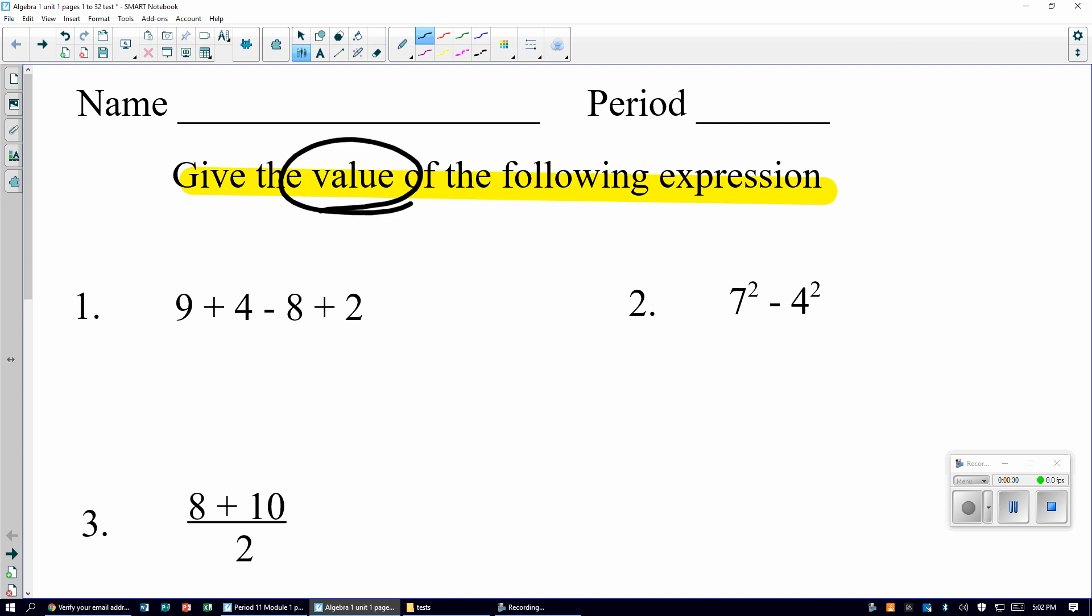PEMDAS, parentheses, none. Exponents, none. Multiplication and division, none. Addition and subtraction from left to right, addition. 13 minus 8 plus 2 from left to right. Then we do 13 minus 8. 5 plus 2 is 7.